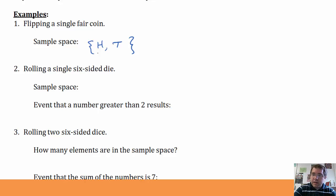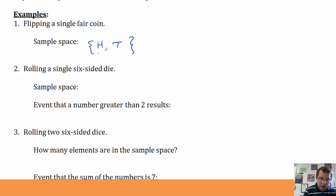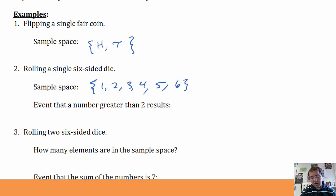How about I take a single six-sided die numbered one, two, three, four, five, and six on the sides. If I roll it, what are the possible outcomes I can get? I could get a one, a two, a three, a four, a five, or a six. So that is my sample space.